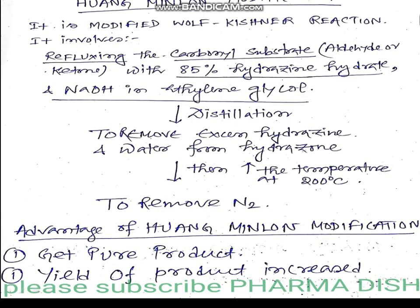Now, the Huang Minlon modification — what is it? It is a modified Wolff-Kishner reduction reaction. This modification involves the refluxing of the carbonyl substrate — that is, the aldehyde or ketone — with 85% hydrazine hydrate and sodium hydroxide, in the presence of ethylene glycol as the solvent.